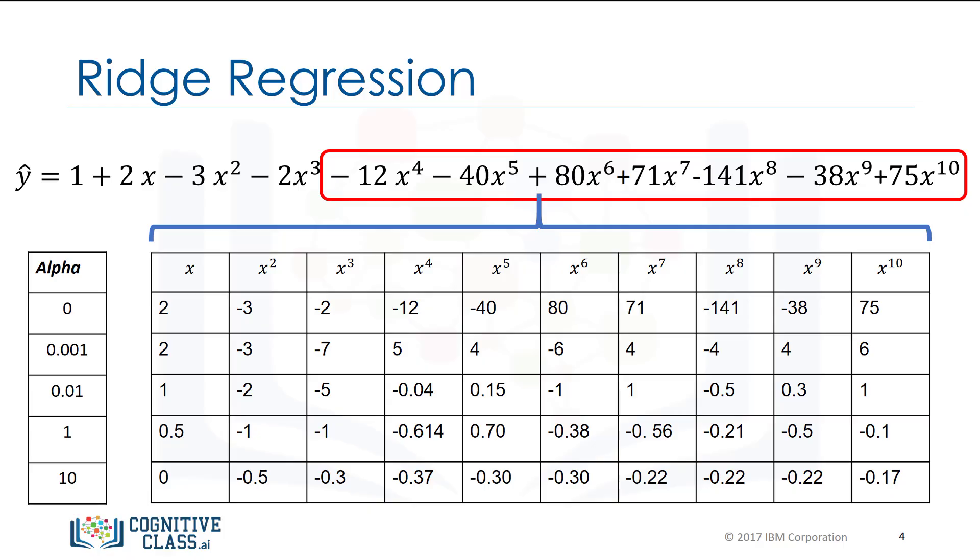The column corresponds to the different polynomial coefficients, and the rows correspond to the different values of alpha. As alpha increases, the parameters get smaller. This is most evident for the higher-order polynomial features, but alpha must be selected carefully.